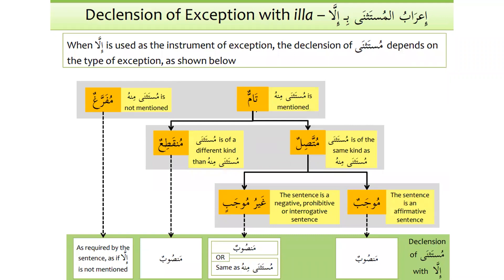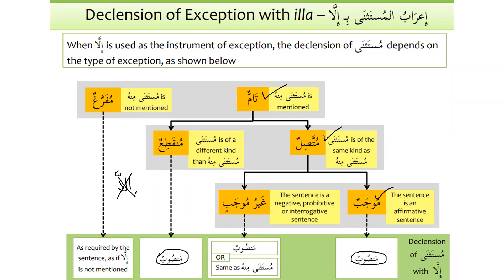If a kalam is tamun, muttasilun, and mujabun, then mustathna will always be mansoob. If it is mufarragun, then mustathna will depend on — as if we remove illa — the irab of the position it occupies. Whatever the possibility is, that will be the irab of mufarragun. Munqatiyun is always mansoob. So two types of mustathna are always mansoob: number one when it is tamun, muttasilun and mujabun, and number two when it is munqatiyun.